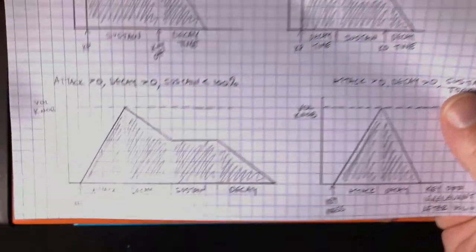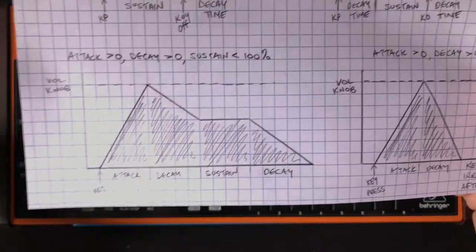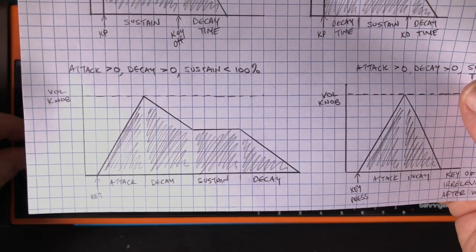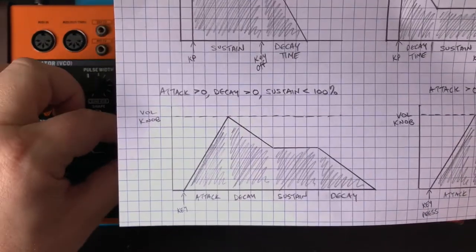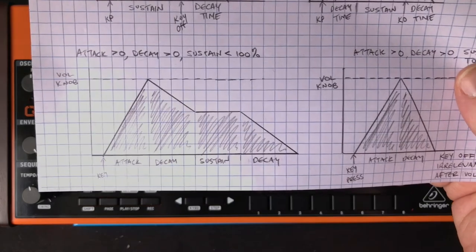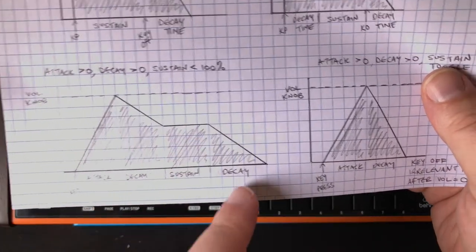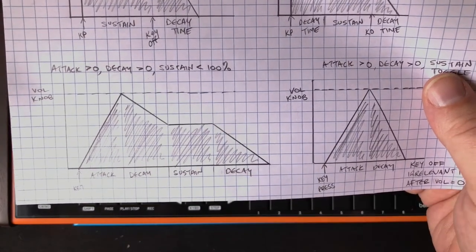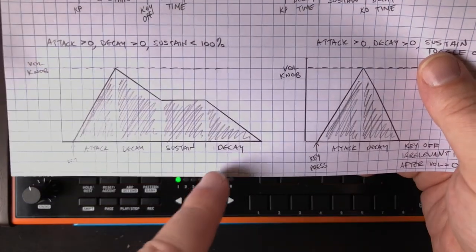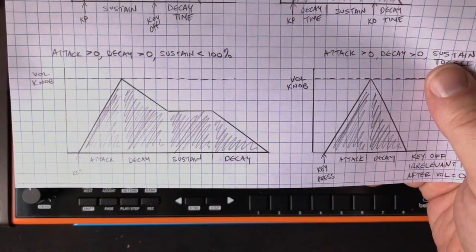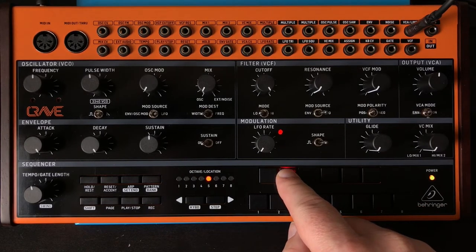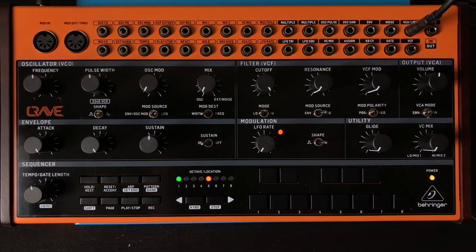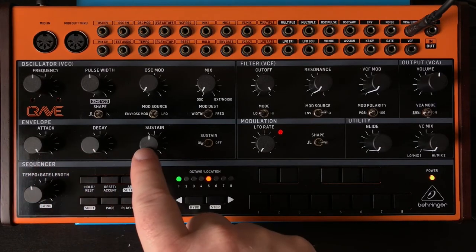Now, our next one is kind of the classic example. Our attack time is something greater than zero. Our decay time is something greater than zero. Our sustain is less than 100%, and then we also decay at the end. So this is the very familiar ADSR, but in this case, release is the same as decay. Oh, and I forgot to mark it. This is the key off point. Okay, here it is. Okay, so we can see how these two knobs are a function of time, and this is a function of level.